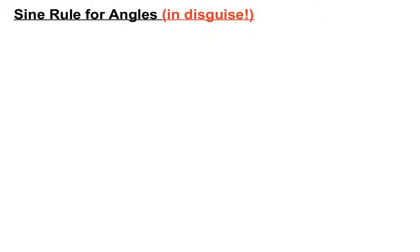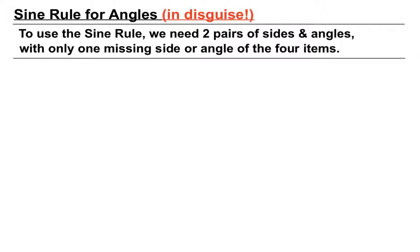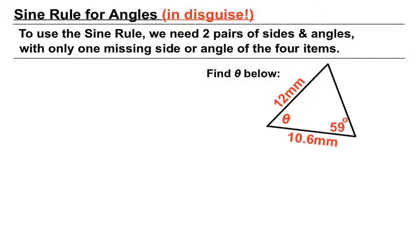Here's a sine rule question that doesn't look like a sine rule at first — it's a sine rule for angles in disguise. To use the sine rule, we really need two pairs of sides and angles, with only one missing item out of the four. Let's see how this one pans out.